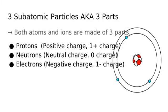Both atoms and ions are made of three parts. Protons have a positive charge. A single proton has a charge of 1+. Notice that in chemistry unlike math class the plus and minus sign goes behind the number. This is because the universal protocol used by scientists all over the world was not developed by English-speaking scientists. Neutrons have a neutral charge. A single neutron has a charge of 0. Lastly electrons have a negative charge. A single electron has a charge of 1-.